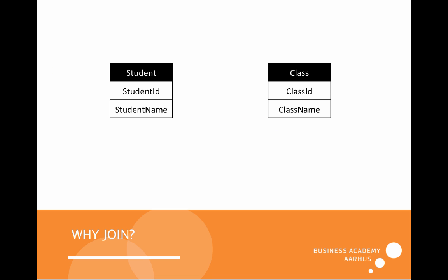So why use joins in the first place? In relational databases we have in this case two entities or two tables: one student and one class. In the student table we have the student ID and student name. In the class we have the class ID and class name. To relate these two to each other we need a foreign key in the students table, so we can say that one class can contain many students and one student can be in one class only.